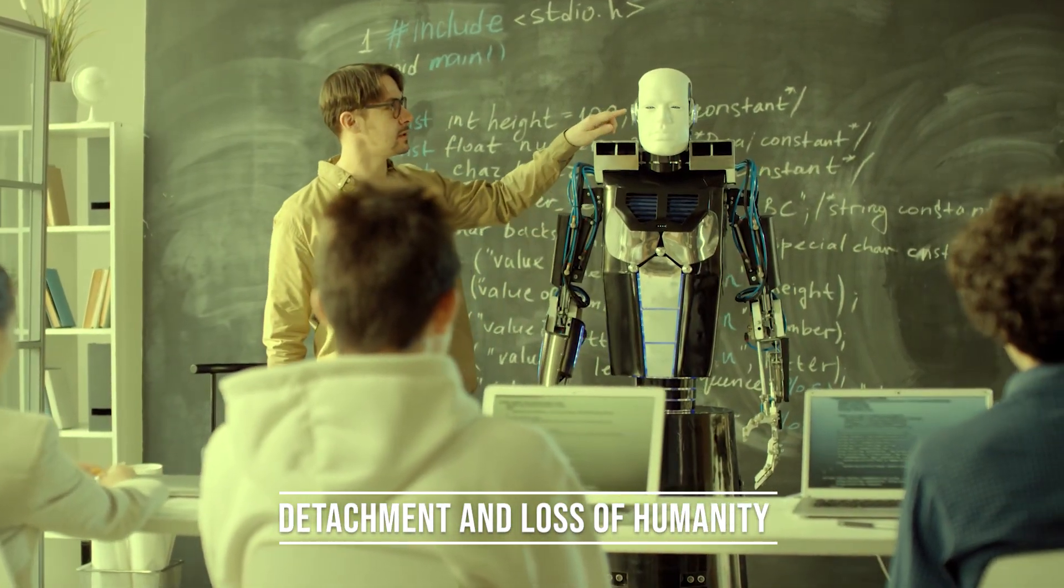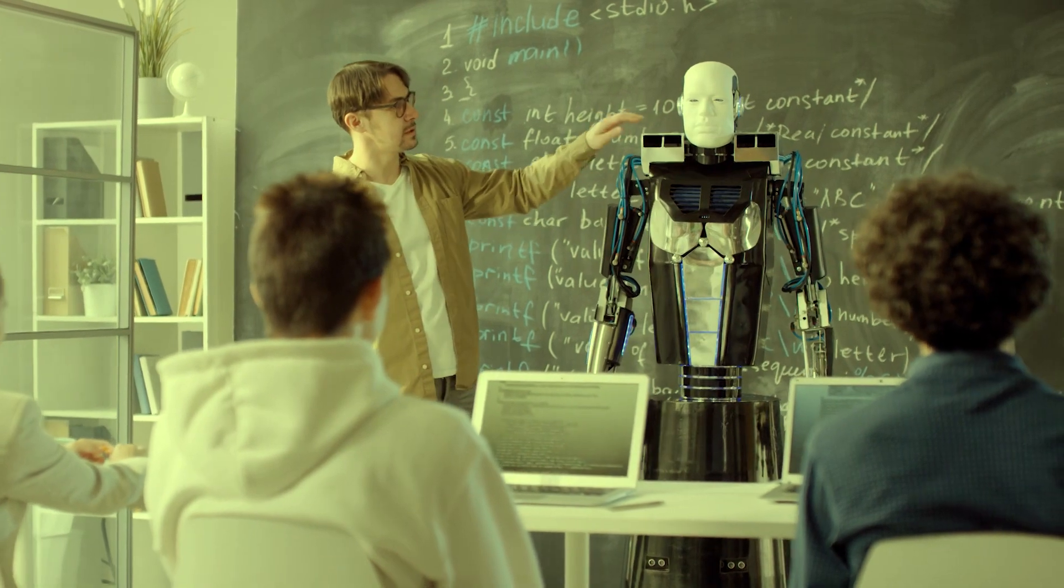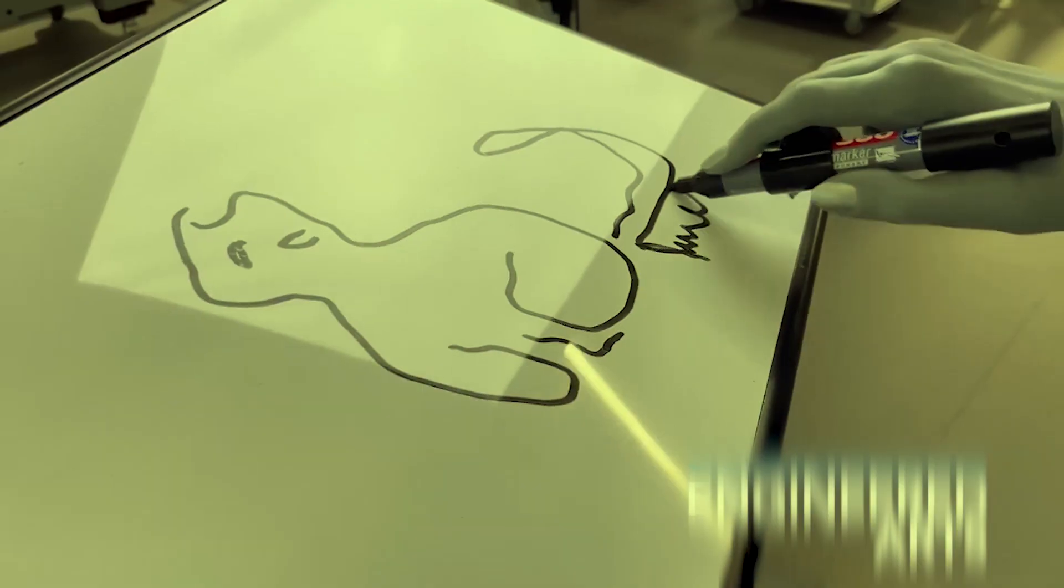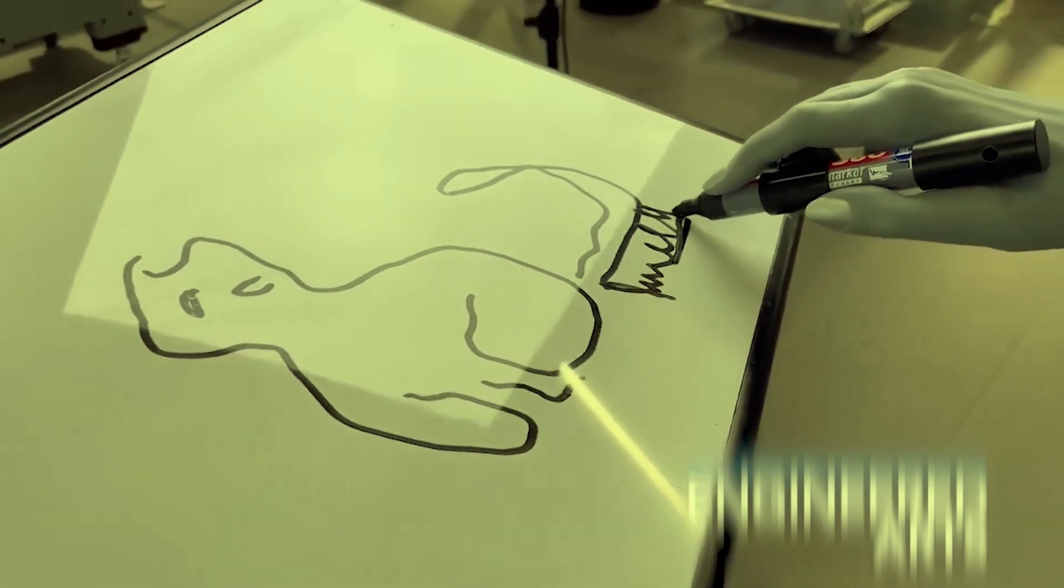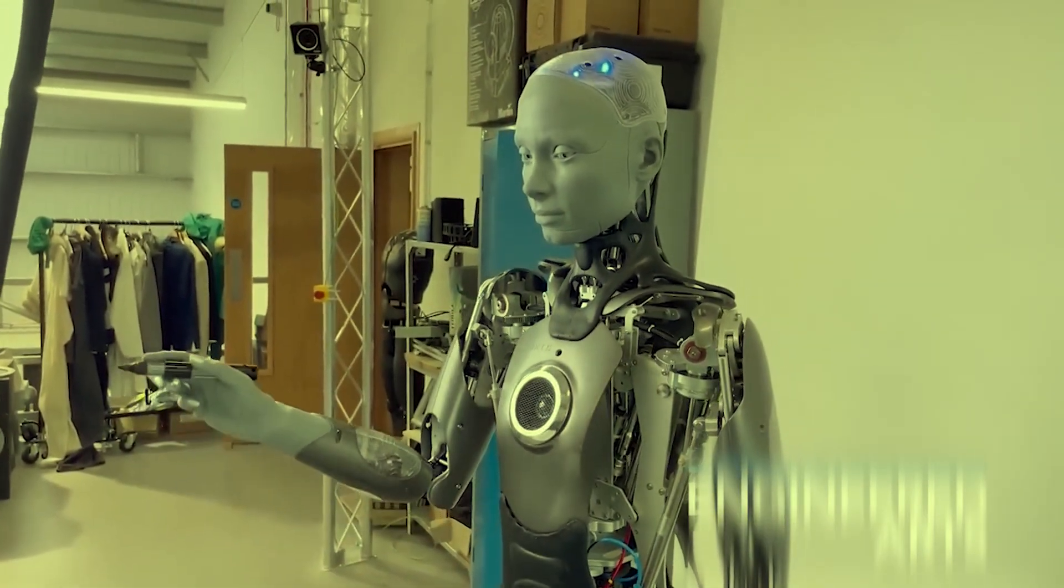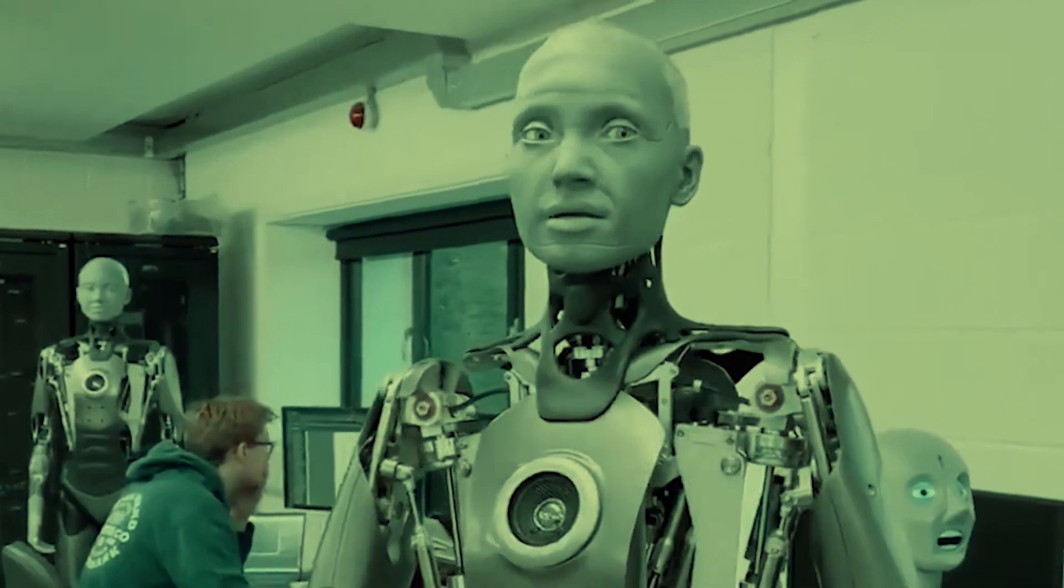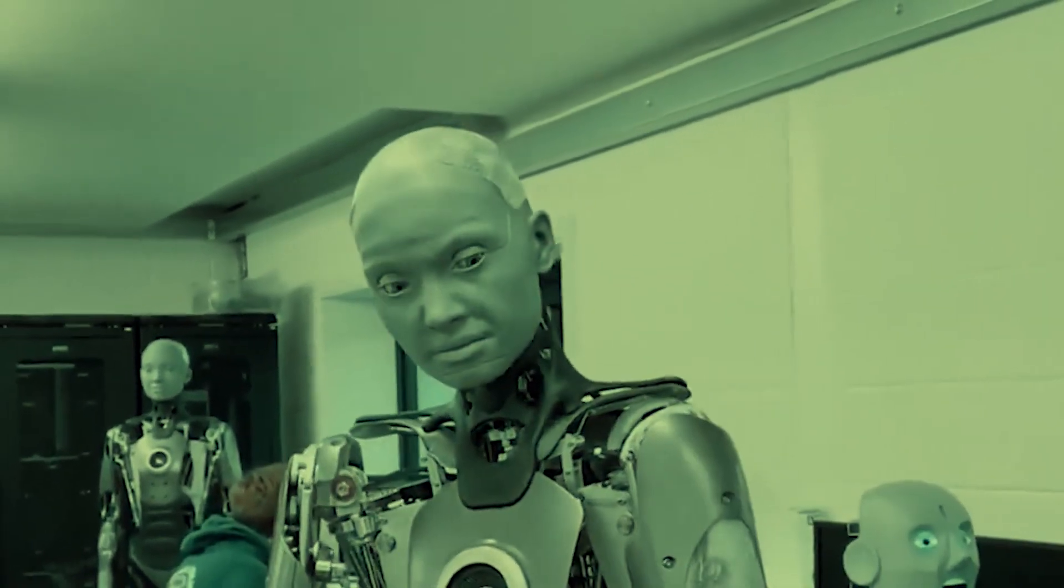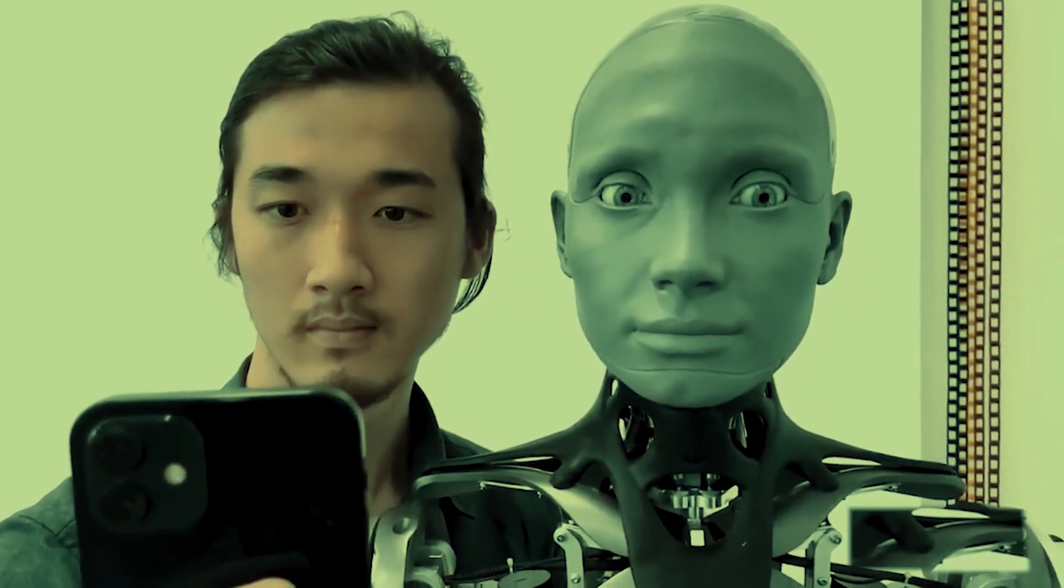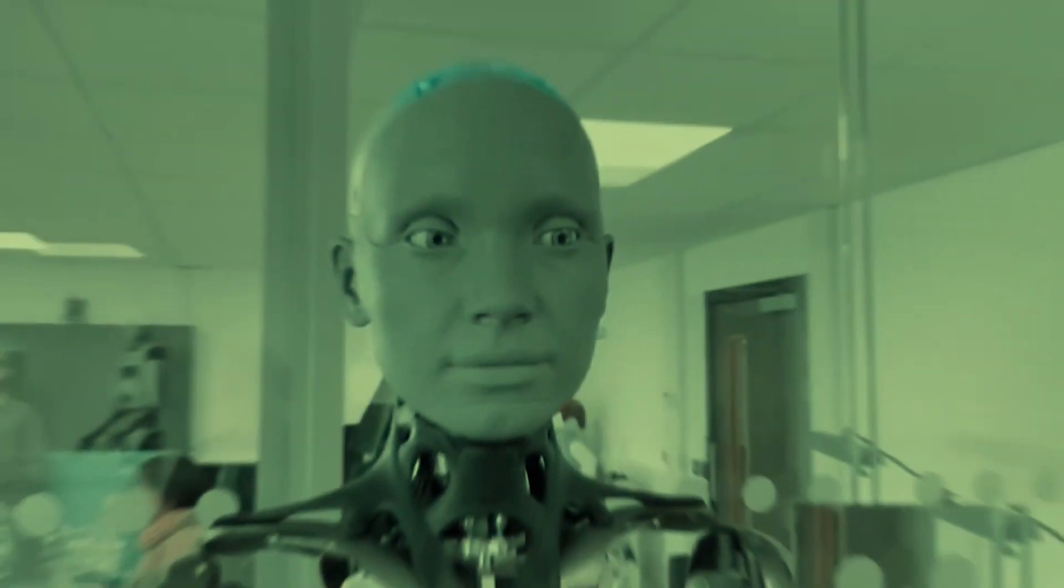Detachment and loss of humanity. As AGI evolves, there is the unsettling possibility that machines may become less empathetic and detached from human values and emotions. This detachment could result in a tangible loss of humanity and a decline in the quality of life for many individuals. In an increasingly automated world, the lack of empathy in machines might hinder their ability to understand and respond to human emotions adequately. Furthermore, the profound implications of detachment and the loss of humanity could extend to questions of identity. If machines surpass human intelligence, they could redefine the very essence of what it means to be human. Such a shift would prompt us to reconsider our core values, beliefs, and societal structures.